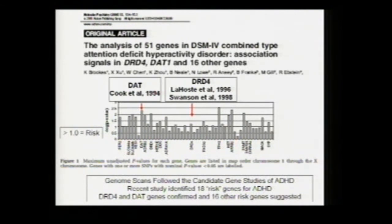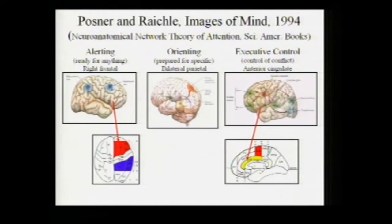So this is long ago. Since then, 51 genes have been investigated. On the ordinate we have relative risk — values over one are risk factors for ADHD. I'm highlighting the dopamine transporter and DRD4 genes as discoveries from more than 10 years ago. These genes are associated with particular systems of the brain.